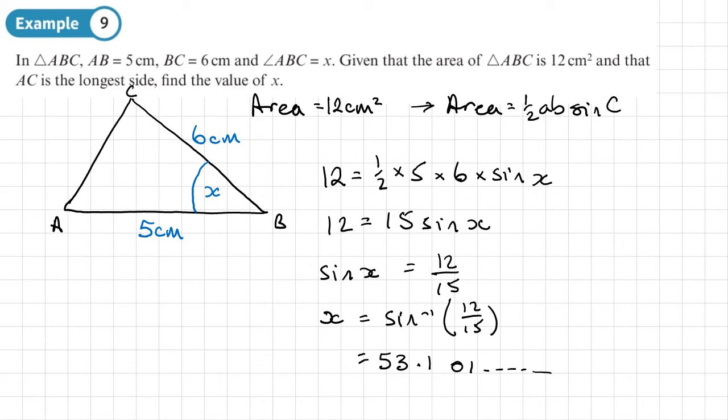And we'll see that that gives us 53.1301 dot dot dot like this. Now we need to be careful because we need to look back and look at the question. It says AC is the longest side. This is the longest side in the triangle. Longest side. Now,